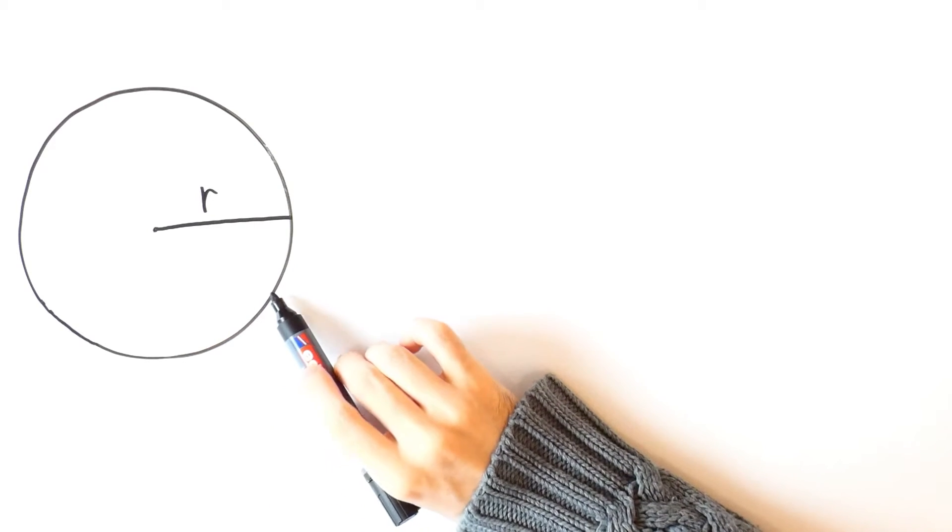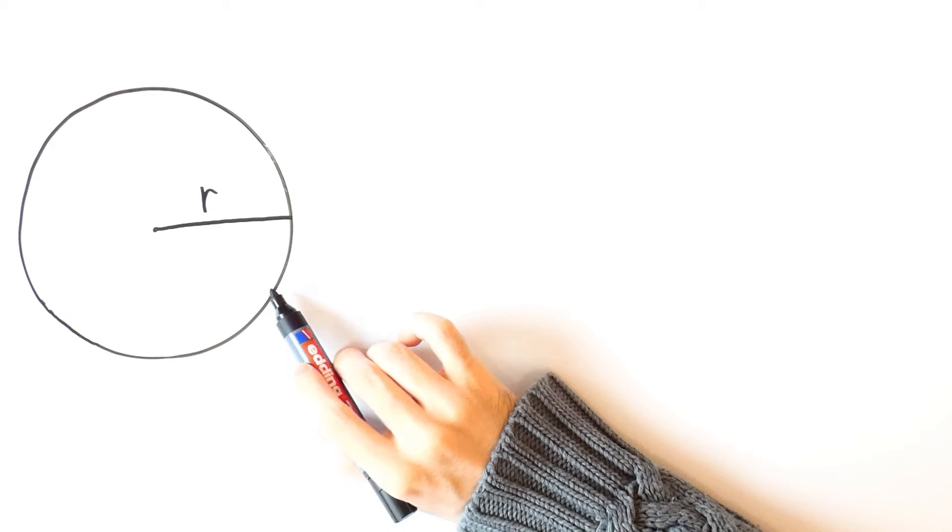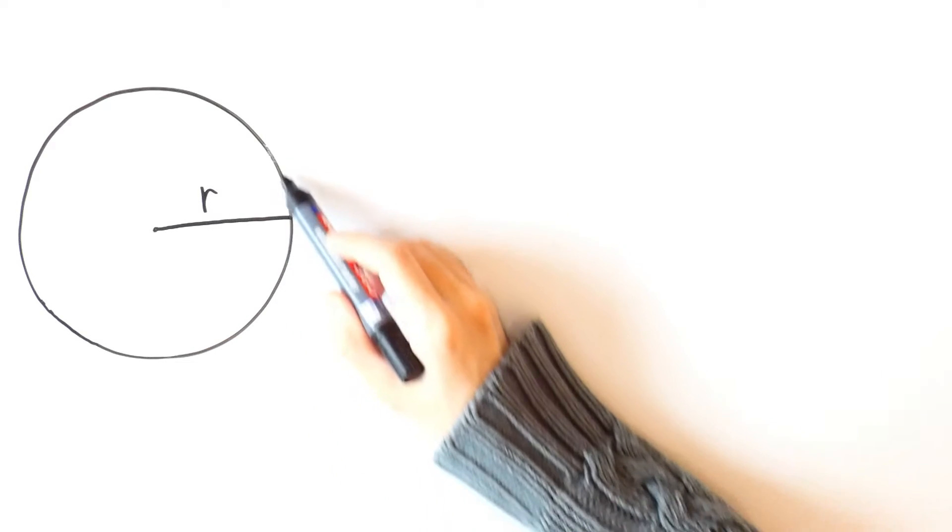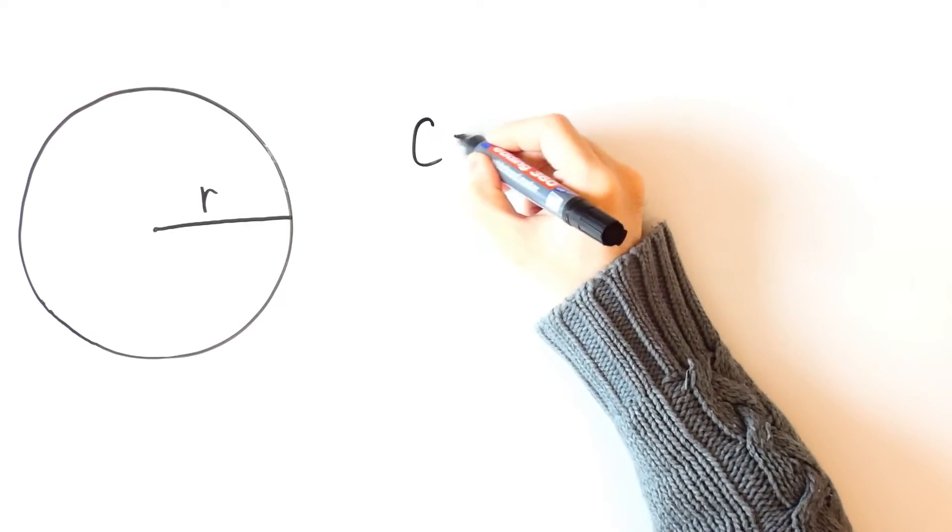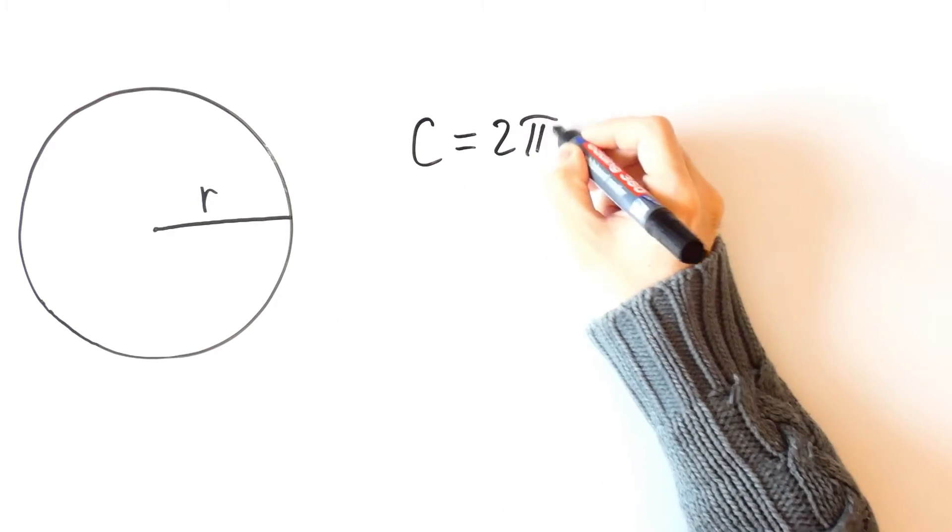First, we need to know what is the perimeter of a circle, also called the circumference. So the circumference is the length of this line and it is equal to 2 pi times the radius.